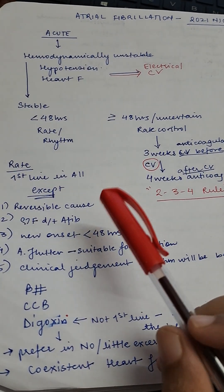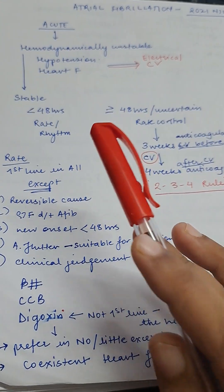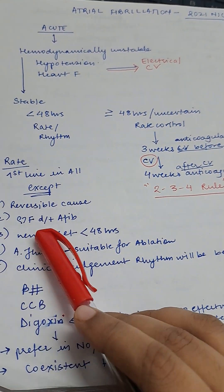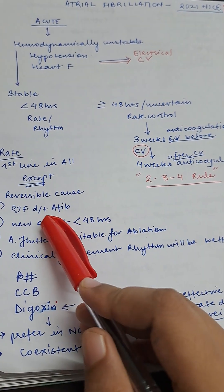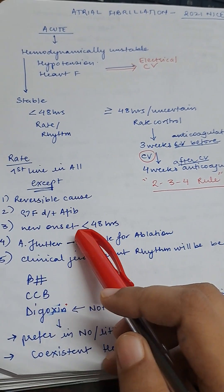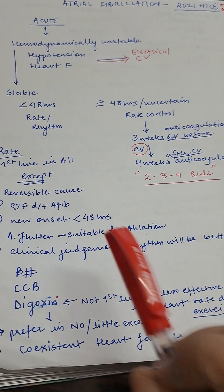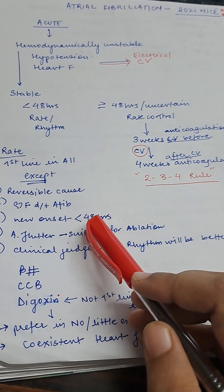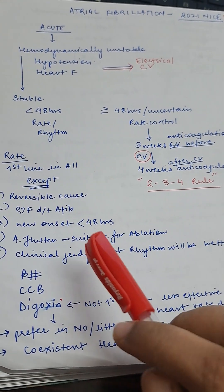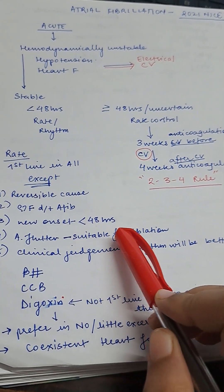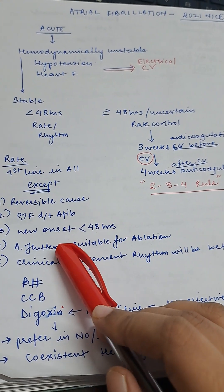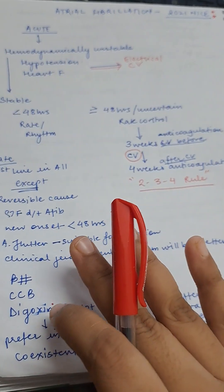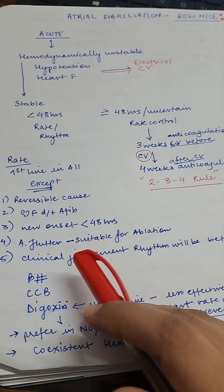Rate control is first line in almost all patients except: if there is a reversible cause of AF, if heart failure is primarily due to AF, for new onset AF less than 48 hours, for atrial flutter suitable for ablation, or if clinical judgment suggests rhythm control will be better. In those cases, prefer rhythm control.